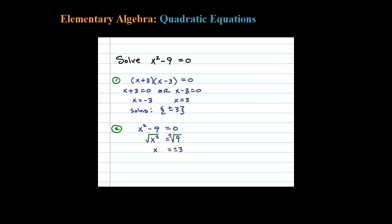There, indicating that positive 3 will work, also negative 3 will work. So you get the same two solutions as long as you remember, whenever you take the square root of both sides, you have to include the plus or minus.